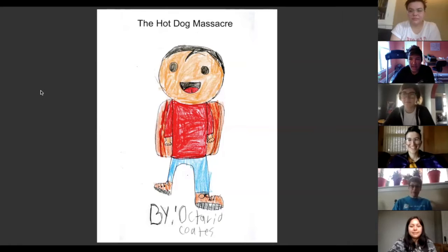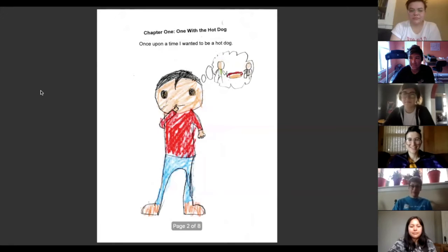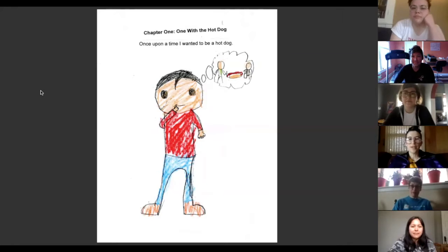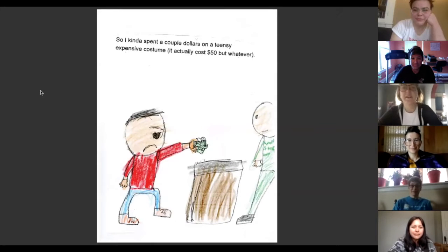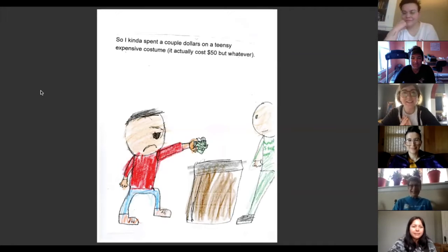The Hot Dog Massacre by Octavio Coates. Chapter One: One with the Hot Dog. Once upon a time, I wanted to be a hot dog, so I spent a couple dollars on a teensy expensive costume. It actually cost $50, but whatever.